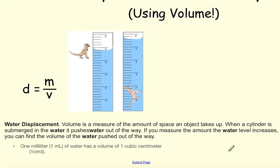When a cylinder is submerged in the water, it pushes water out of the way. So in this case, we're submerging a dinosaur. If you measure the amount of water, the level increases, you can find the volume of the water pushed out of the way. So let's take a look at that. And then here's a little note. One milliliter of water has a volume of one cubic centimeter.